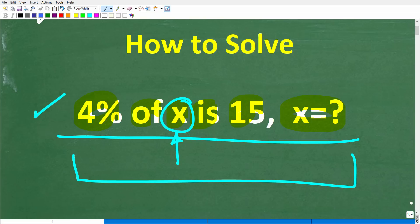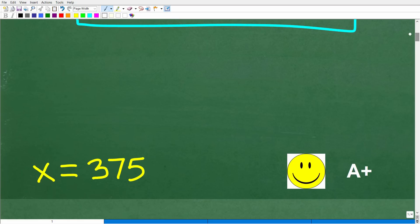So once again, here is our problem. So 4% of x or 4% of what number is 15? Let's take a look at the answer. The correct answer is 375. So that is what x is equal to.